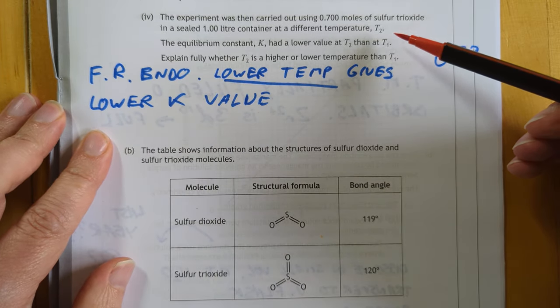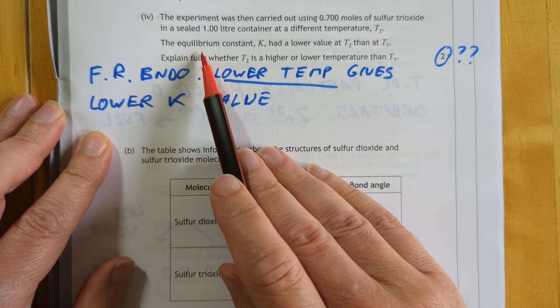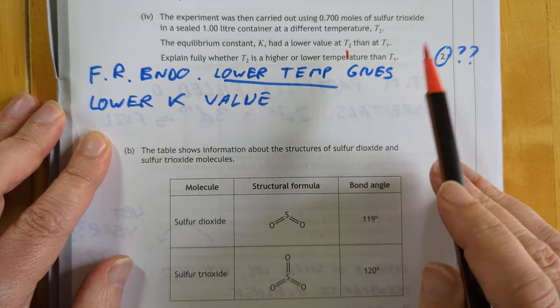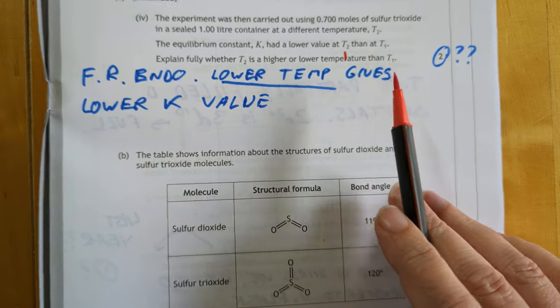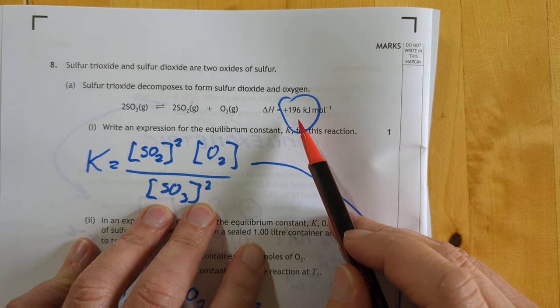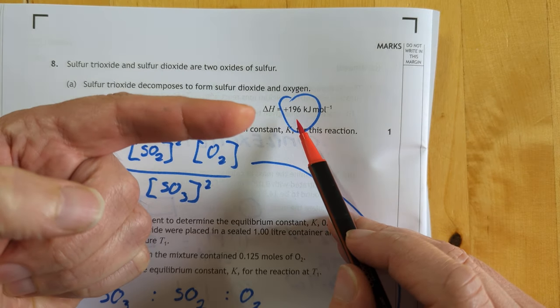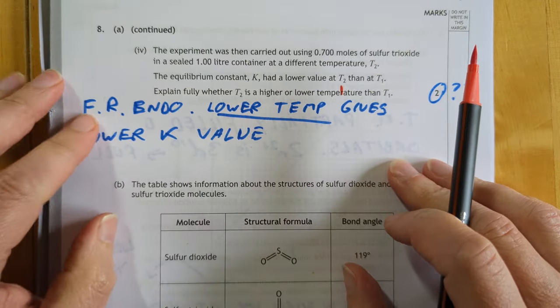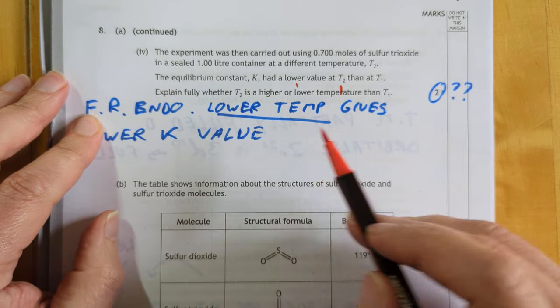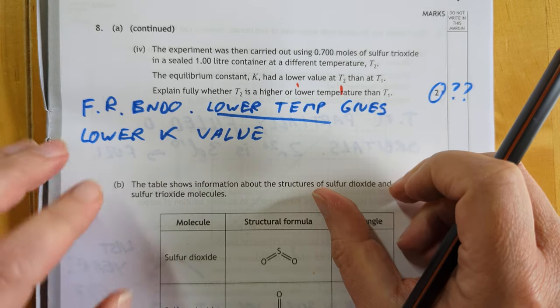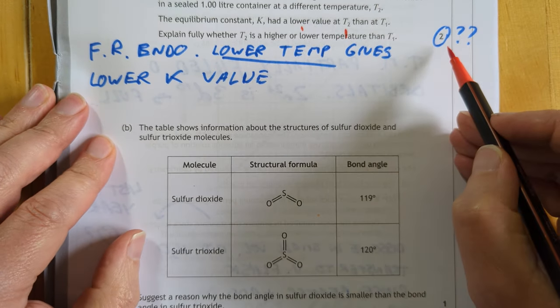On the other hand, if we have changed the temperature here, and it's telling us the equilibrium constant was lower at this new temperature compared to the original one. And we need to flip back to here, which is why I'd circled it. The delta H is positive 196, which means that direction there, left to right, is endothermic. And if this direction here is endothermic and the value of K is now going down, that means you have not increased the temperature because otherwise you would have raised the K. You must have dropped the temperature. Don't know how they're going to allocate the marks on this.